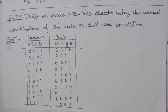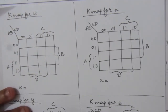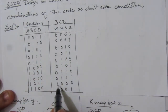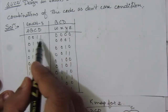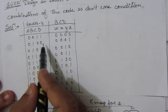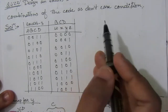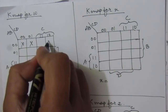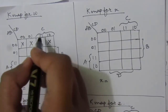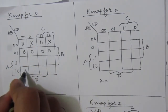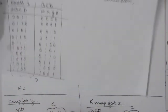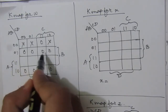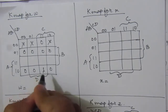Now let us make the K-map. I have already drawn the K-map here, and we need to fill in the values for W, X, Y, and Z. For W, the values are 0 0 0 0 0 0 0 0 and the last two are 1 and 1. We place 0 at minterm 3, 0 at minterm 4, and don't care conditions for 0, 1, and 2. The values 11 and 12 are 1.